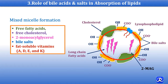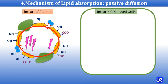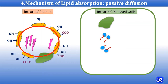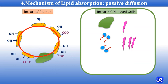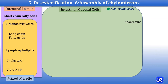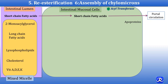All the lipid components are absorbed in the intestinal mucosal cells by passive diffusion, but the rate of absorption is different. 2-monoacylglycerol and fatty acids are absorbed completely, while only 40% of cholesterol is absorbed, depending on their water solubility. Short and medium chain fatty acids are not dependent on micelle formation for absorption. They are not re-esterified in the mucosal cell and are directly absorbed into portal circulation, transported to the liver bound to albumin.